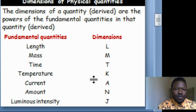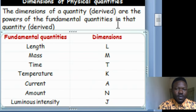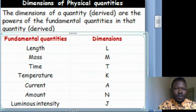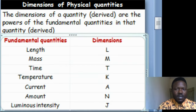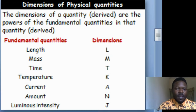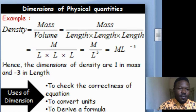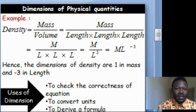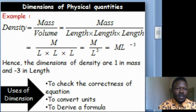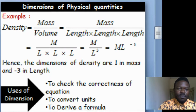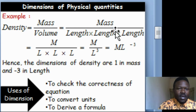Now we should be able to see how these dimensions work — that is, how we can use them. For example, if somebody asks you what is the dimension of density? Density is mass over volume. Mass is a fundamental quantity, so we only convert it.